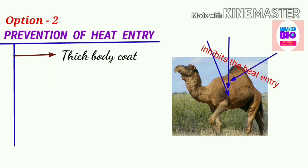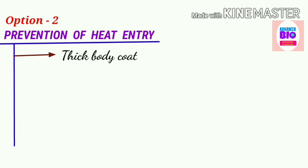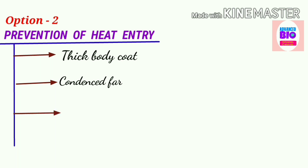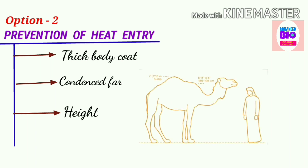Then point number two: that is condensed fur. Condensed fur has the same role. And then the last point, that is third one: height. Their long legs make their height off—this is much advantageous for protecting heat gaining. Their heights facilitate them to hold their bodies from the hot sand.